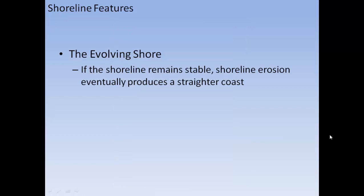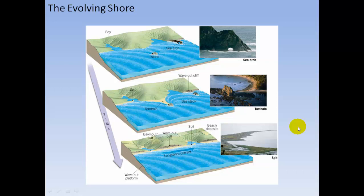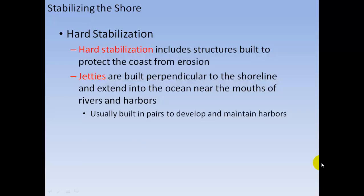If a shoreline remains stable, erosion eventually produces a straighter coast. A series of headlands and bays is gradually eroded, with headlands worn away and sand deposited between land and islands, until the shoreline is straightened through erosion and deposition.